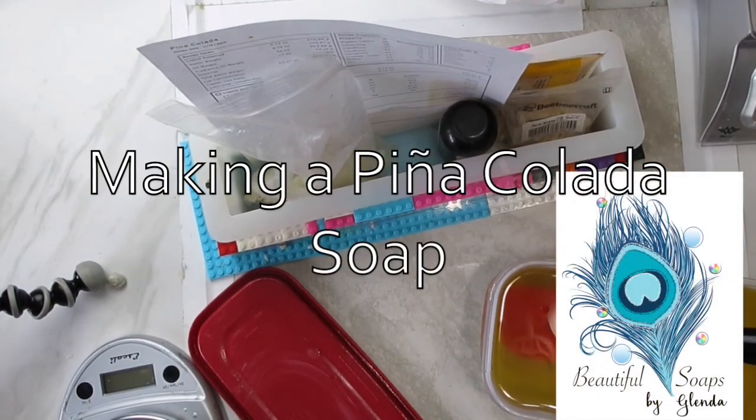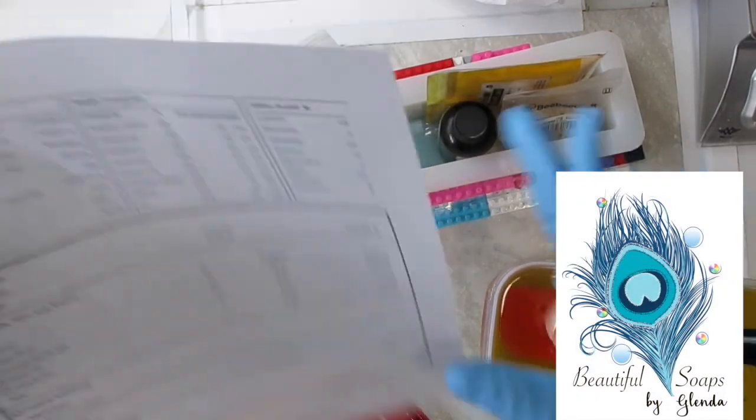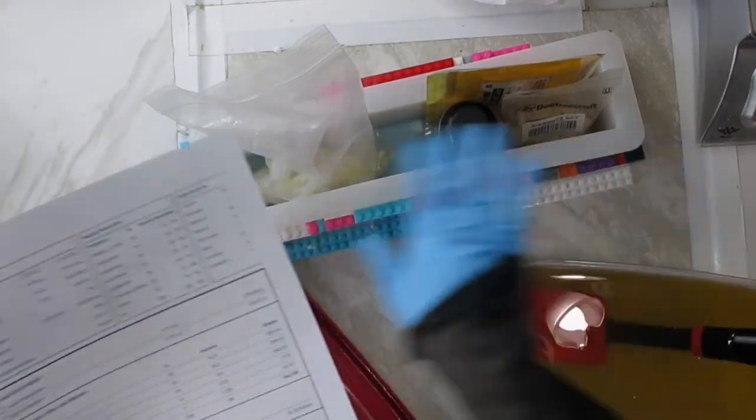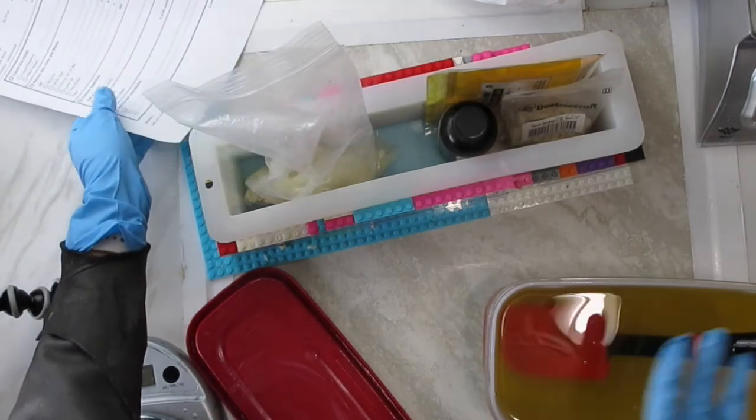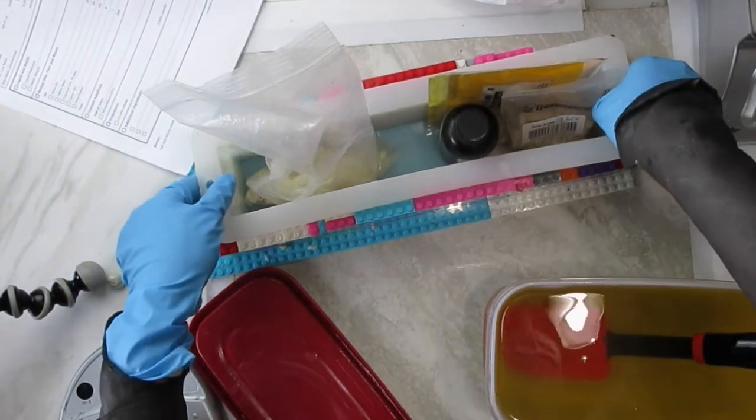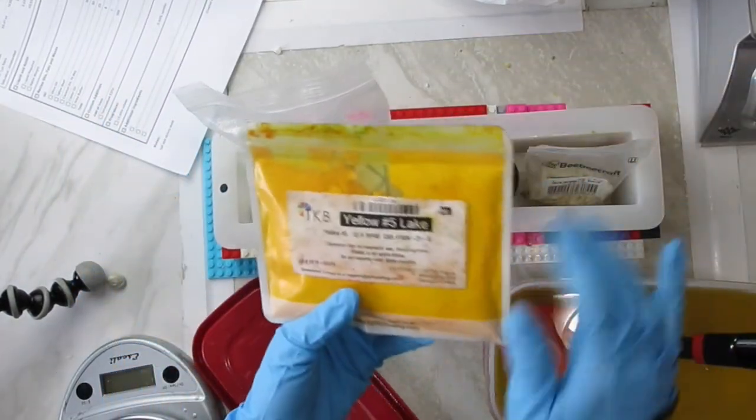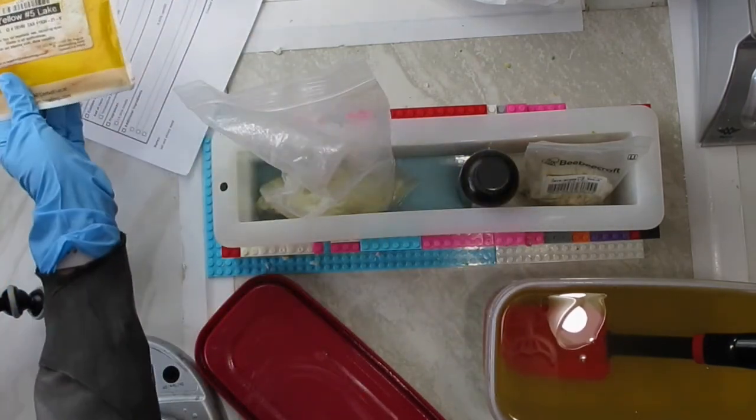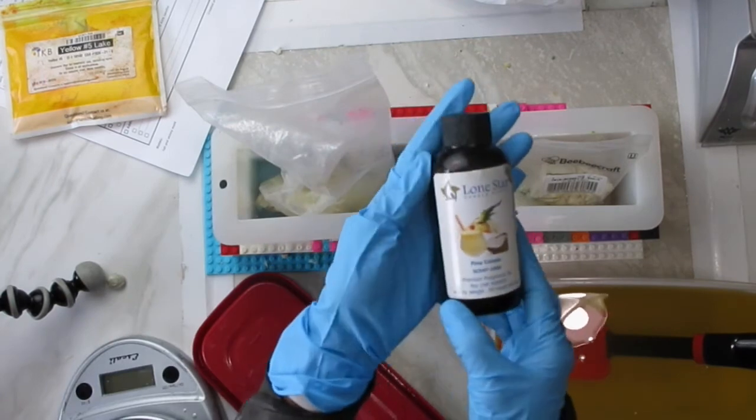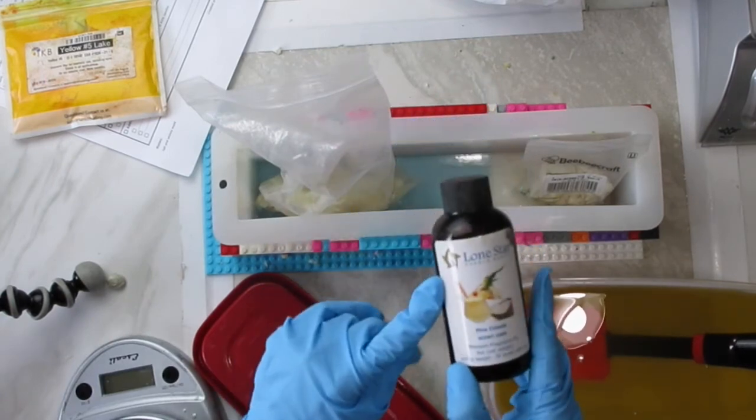Hi, this is Glenda and today I'm making a piña colada soap. I have here the recipe and most of everything that I'm going to need. The oils which I'm actually going to measure them out. I'll be using a little bit of this colorant yellow number 5 and the fragrance will be piña colada from Lone Star Candle Supply.